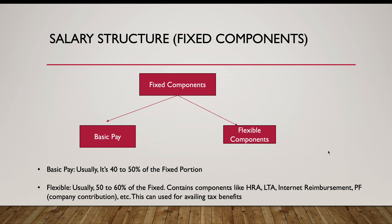In the fixed component we have the basic pay and the flexible components. This structure is generally the same for every company. The basic pay is around 40 to 50 percent of the fixed component, and the flexible portion is the remaining 50 to 60 percent. The flexible component contains things like HRA, leave travel allowance, internet reimbursement, and the company's contribution to PF.